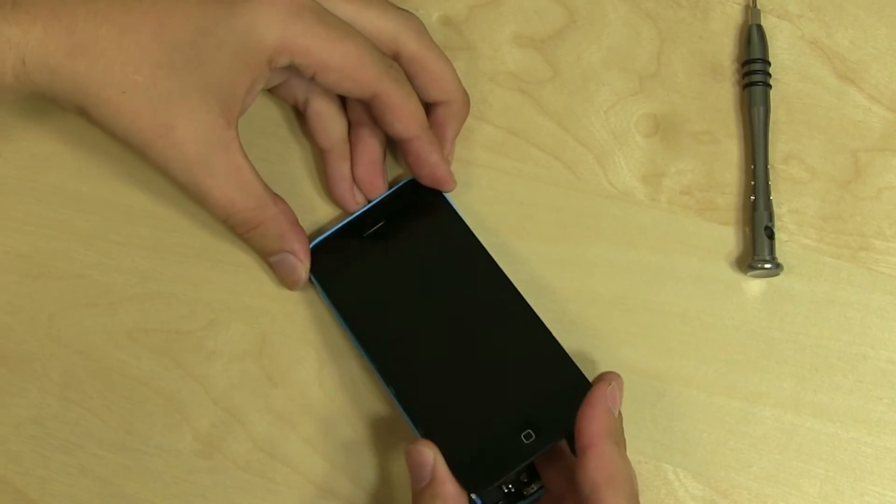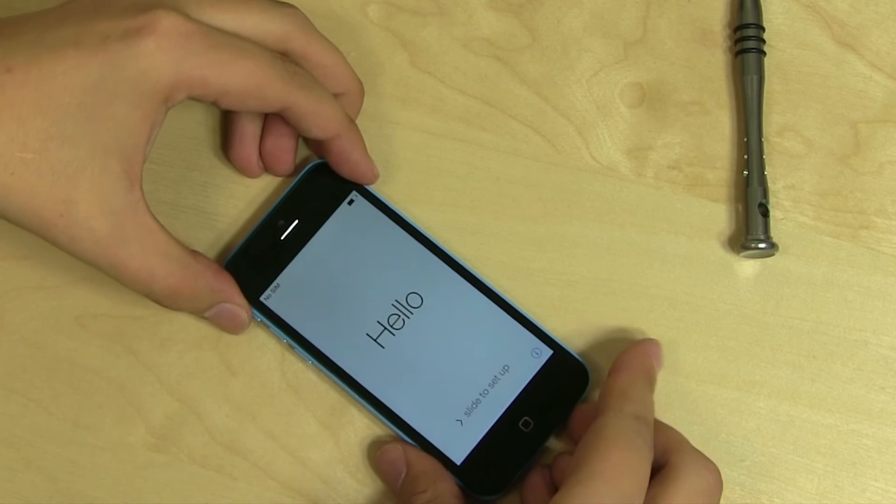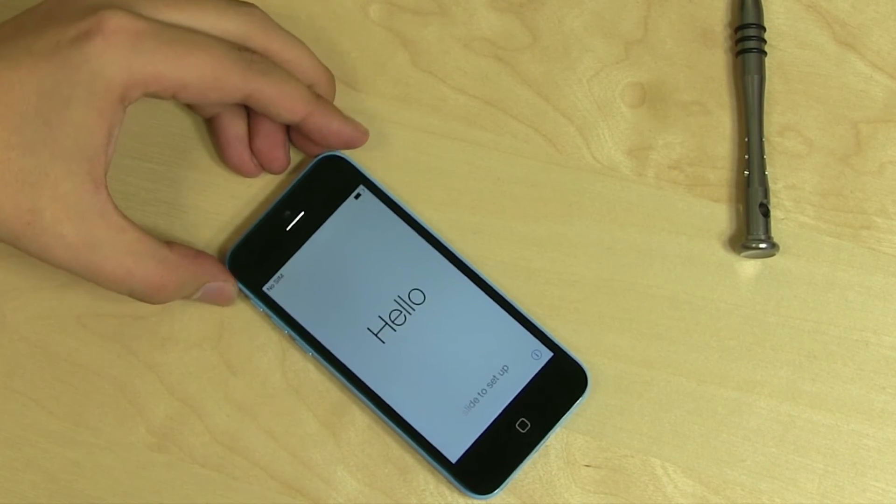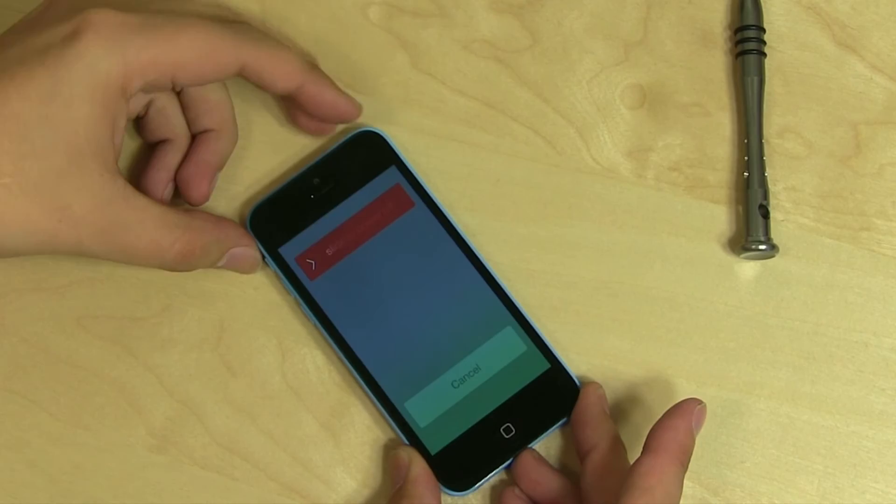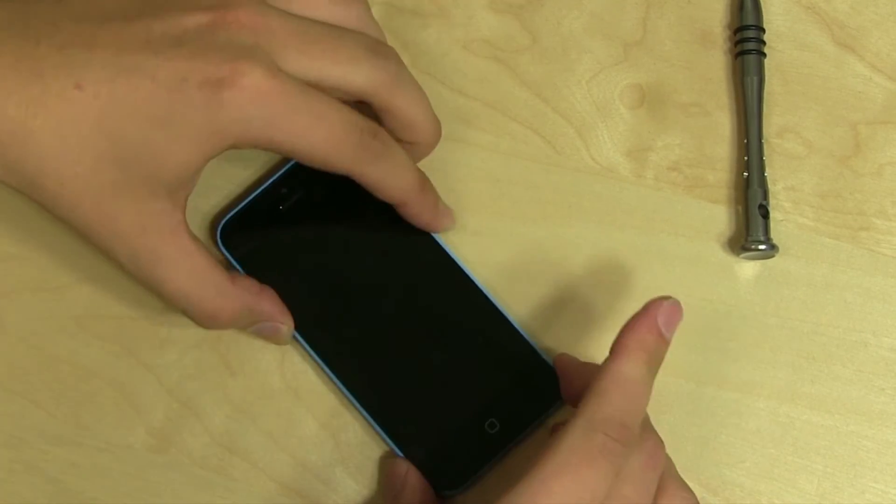Lay the display assembly down and turn the phone on for a test. If the startup graphics appear, the part is installed correctly. Hold the power button down and confirm the shutdown on screen.